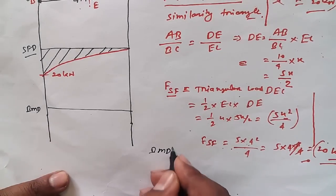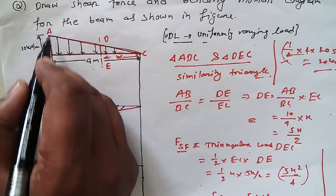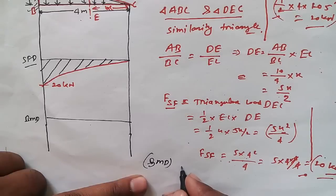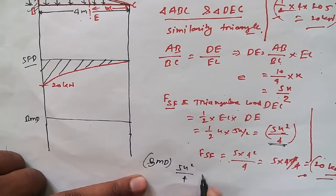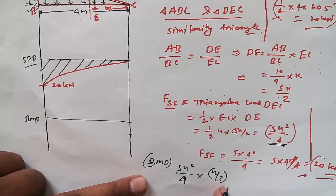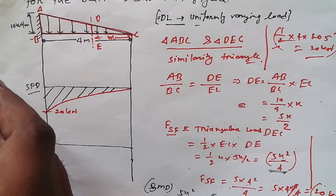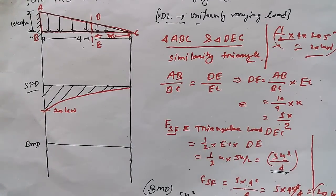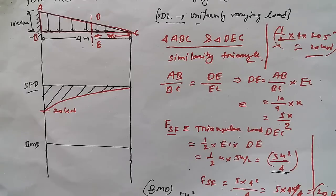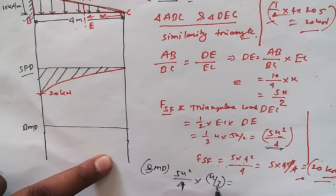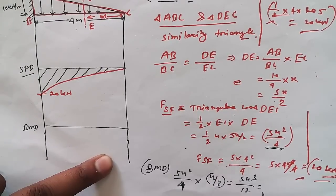For the bending moment diagram, if the thicker side is on the fixed side, what we have to do is multiply the shear force formula: 5X² / 4 into X / 3. We have to always do this when the thicker side is fixed, whether it is a cantilever or a simply supported beam where we fix one side to find reactions. So we get 5X² / 4 × X / 3 = 5X³ / 12.